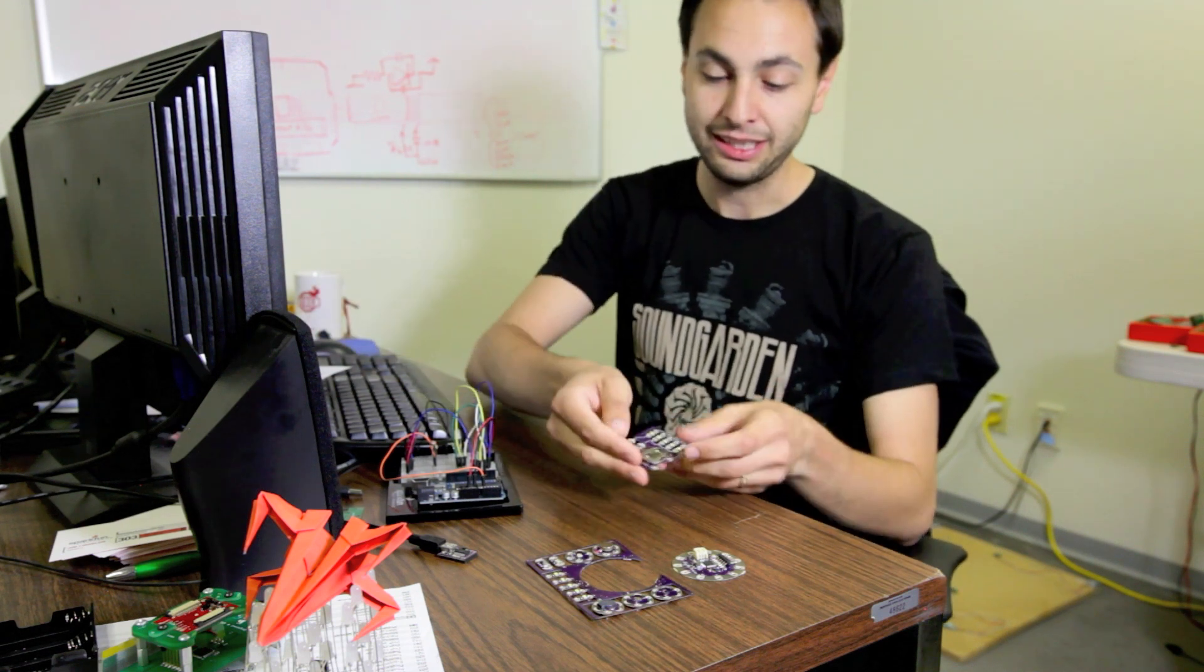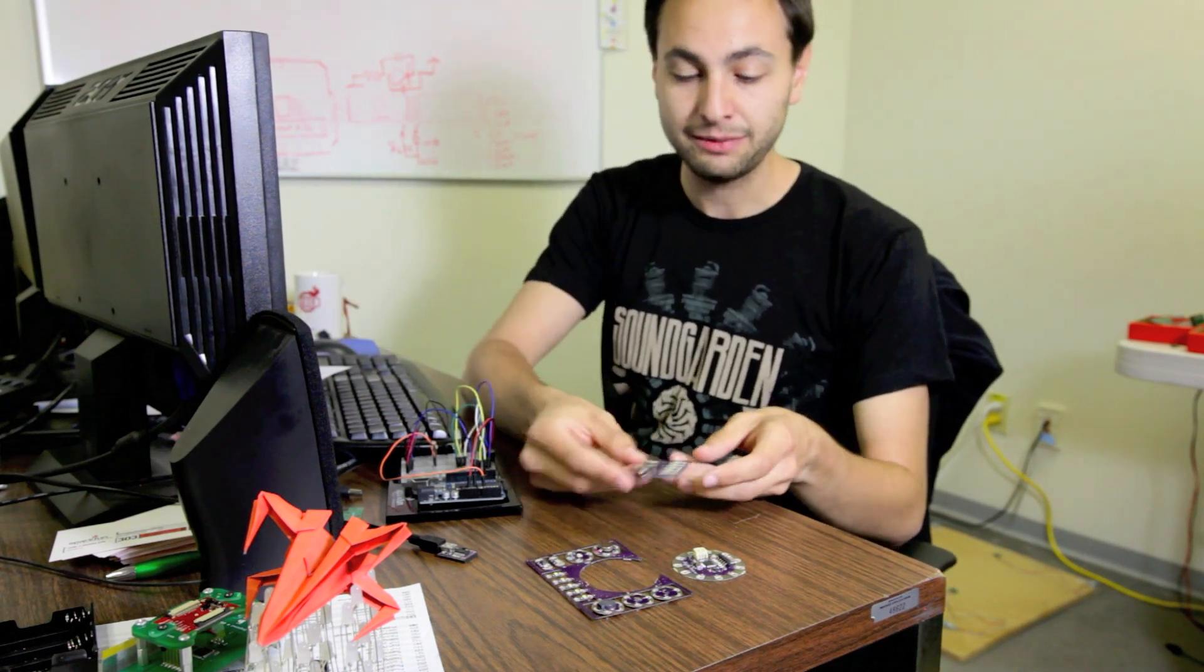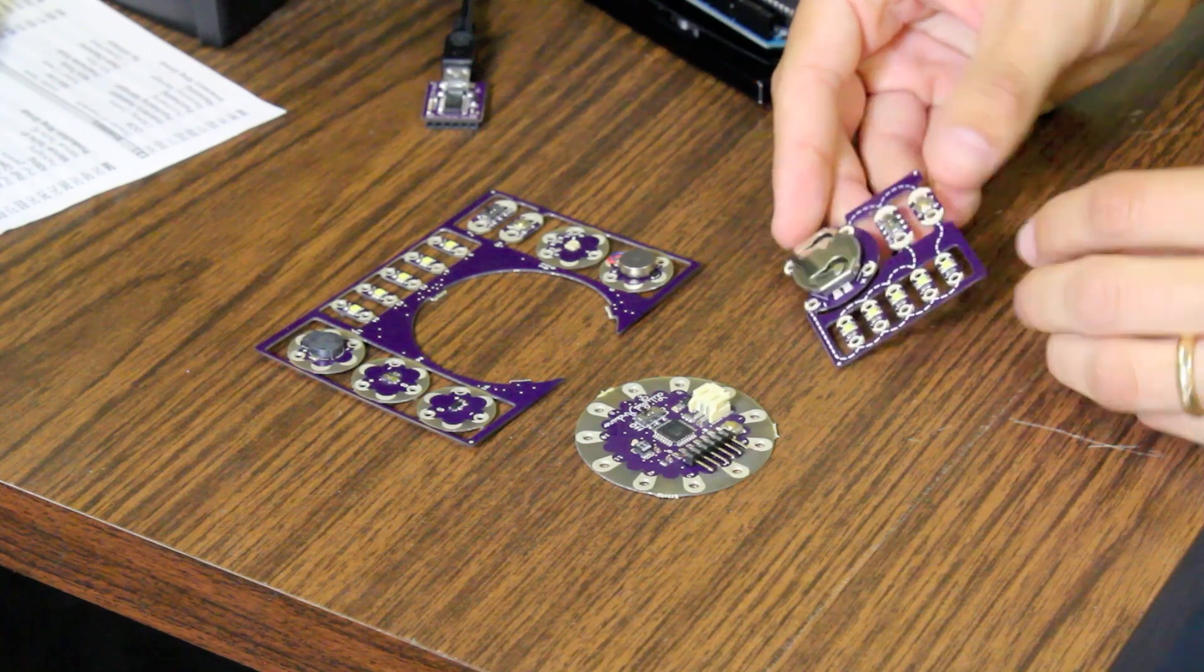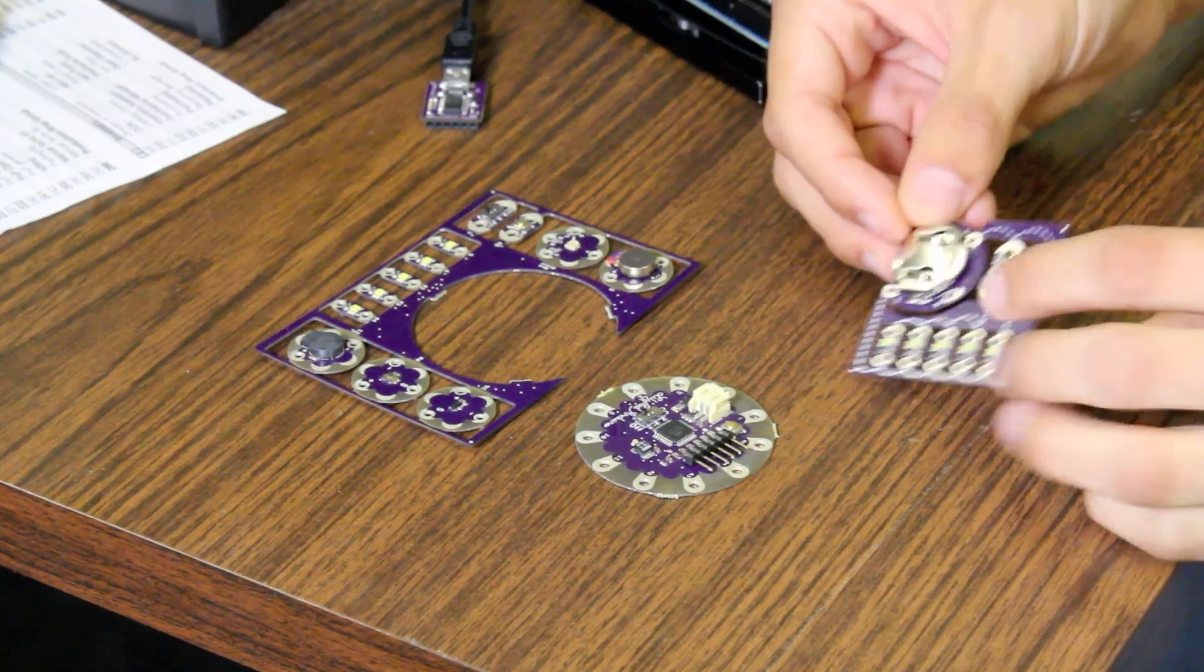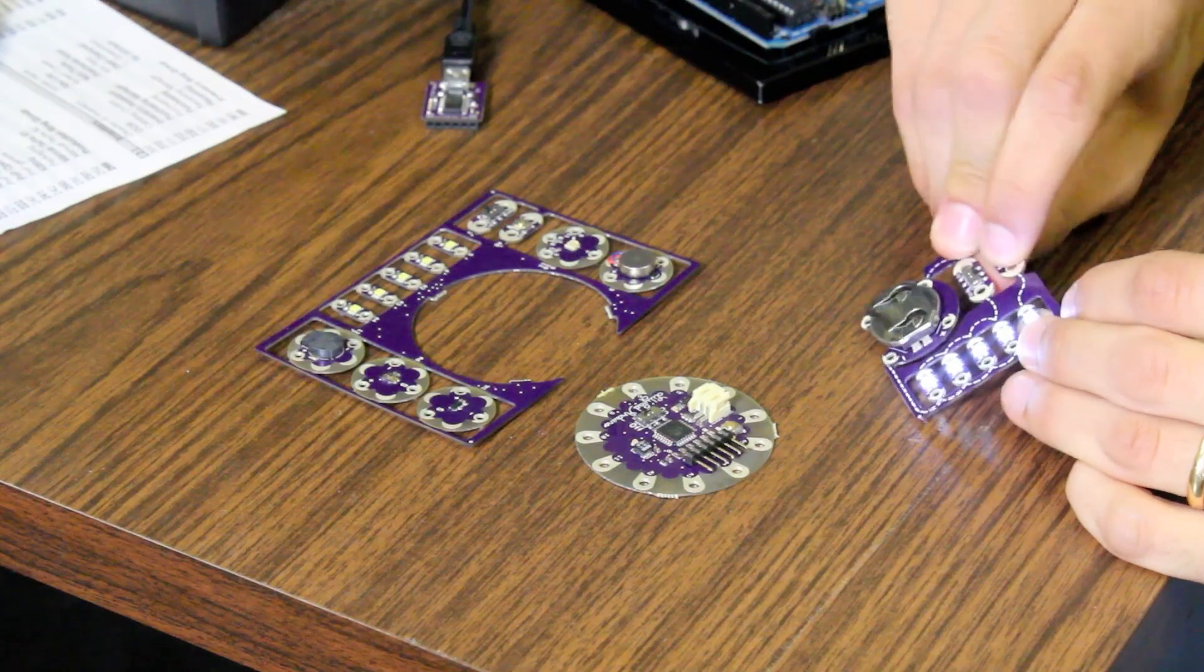For instance, we've got the LilyPad dev board and we've got a LilyPad e-sewing kit, which is a similar concept. It's got a coin cell battery, some buttons and switches and LEDs.